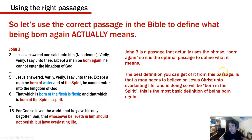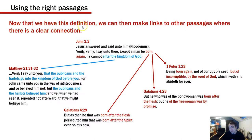The best definition from this passage is that a man needs to believe on Jesus Christ for everlasting life, and in doing so he will be born in the spirit — born again. That's its most basic definition, and it's actually really simple. See how the Bible keeps the definition simple; it's only other people's explanations that have made it complicated. We can then make links to other passages with a clear connection, such as 1 Peter 1:23 — 'being born again, not of corruptible seed but of incorruptible, by the word of God' — which is perfectly consistent with John 3.